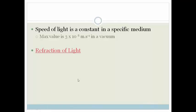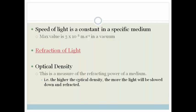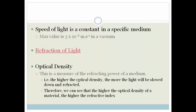Right, grade 11. So what I want to explain to you quickly is what they mean by optical density. Optical density is a measure of the refracting power of a medium. In other words, the higher the optical density, the more the light is going to be slowed down and therefore more refracted. So basically, the higher your optical density, the slower the light is going to go through that medium and the more it's going to be refracted. So the higher the optical density, the higher the refractive index.